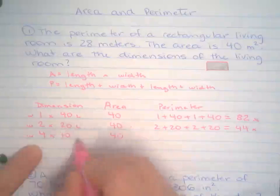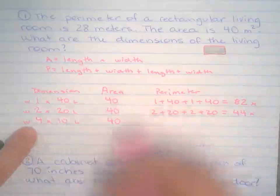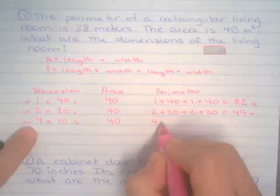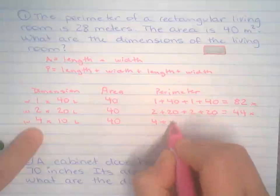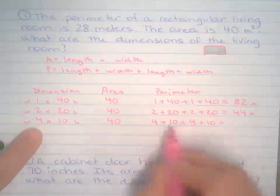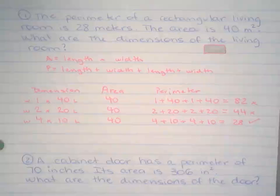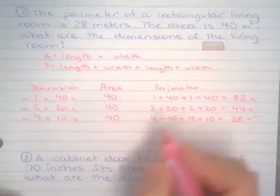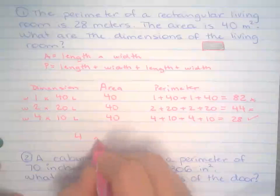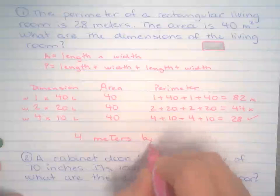So it has to be the last one unless I did something wrong, which is always possible. So width is 4, length 10, 4, 10. Oh, that's 20, that's 28. Aha! I found it. So the dimensions of this living room will be 4 meters by 10 meters.